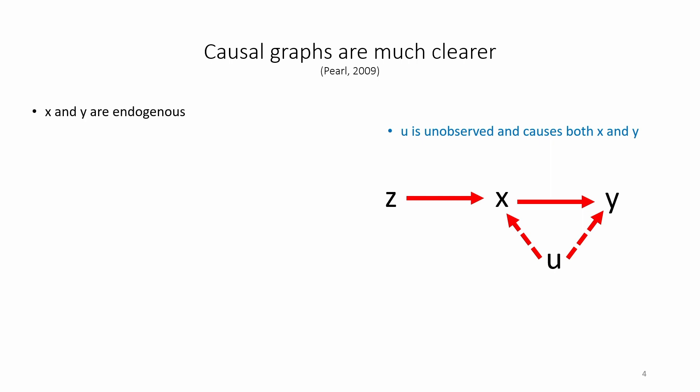In this graph, x and y are endogenous. Arrows show the direction of causality. There is a background variable u that means that the correlation between x and y cannot simply be interpreted as a causal effect of x on y. U is unobserved and causes both x and y. The graph shows that z is related to x. More specifically, we can see that z causes x.